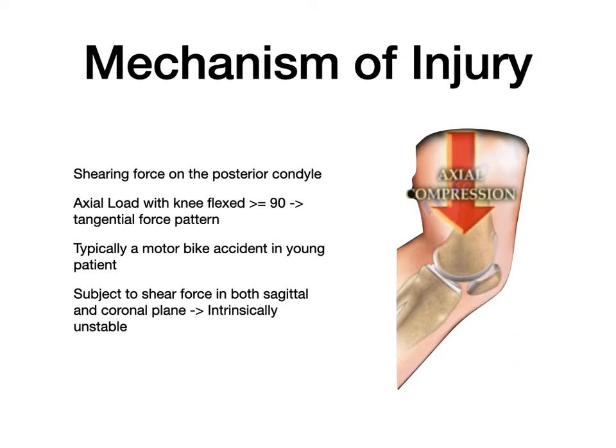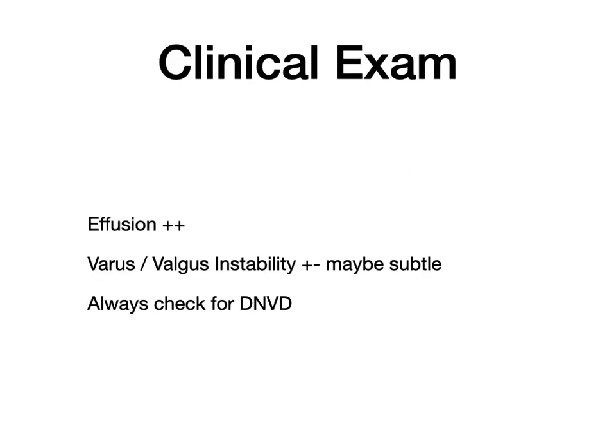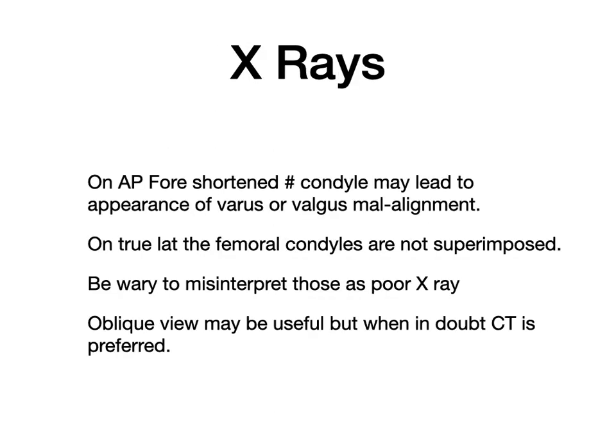These fractures result from shear forces in both sagittal and coronal planes, making them intrinsically unstable. Clinical exam will reveal an effusion and a very subtle varus or valgus instability may be present. Always remember to check for distal neurovascular deficit. On AP X-rays there will be a foreshortened condyle, which may produce the appearance of varus or valgus malalignment. On a true lateral view, the femoral condyles will not appear superimposed. Oblique views may add to diagnostics.